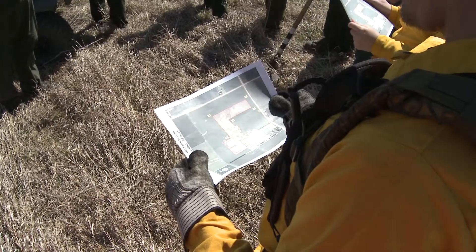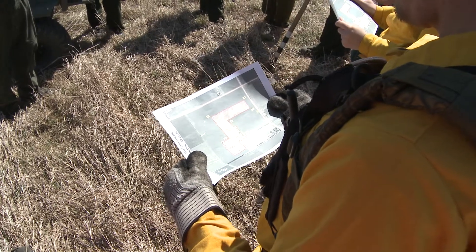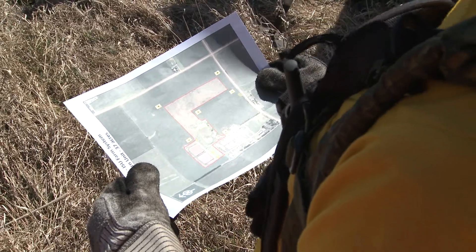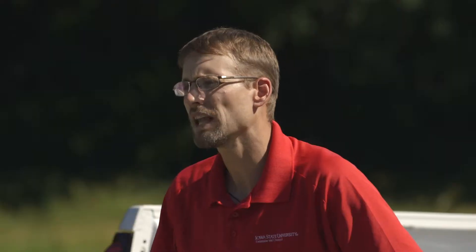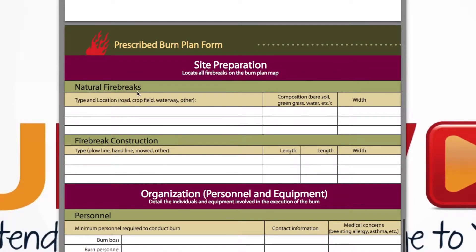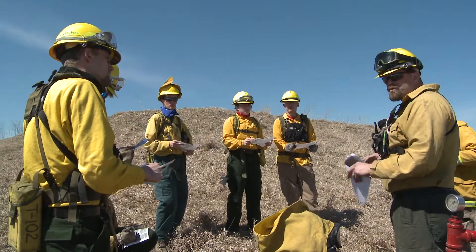You begin to think about the site that you are going to burn and you start by creating a map of the burn area. You know the number of acres, you know the terrain, you know the natural fire breaks that are already there on the site. It helps you plan what fire breaks you need to put in. Knowing the size, the terrain, and the number of fire breaks will allow you to estimate the number of individuals you're going to need on site the day of the burn.